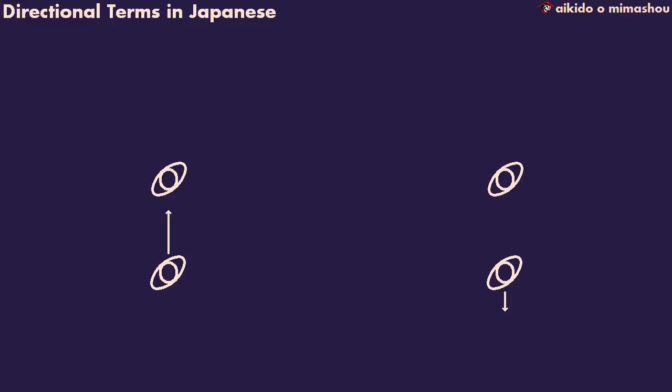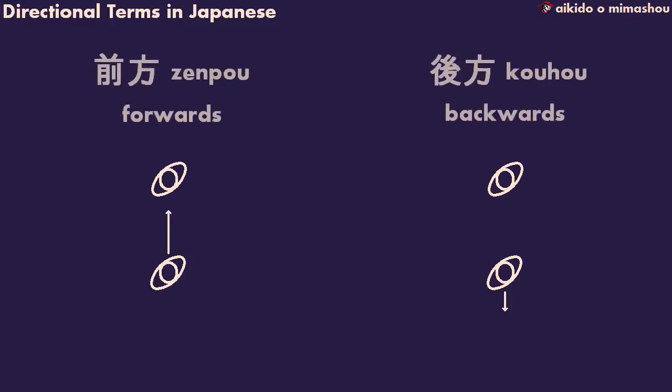These words can be used to mean movement, but you might also hear two different words being used. Zen-po means forwards — the N actually sounds like M for mother. Zen-po. Ko-ho means backwards. Ko-ho. These words aren't used as often as ma-e and u-shi-ro, but it's useful to know why there's a slightly different context for both groups of words.